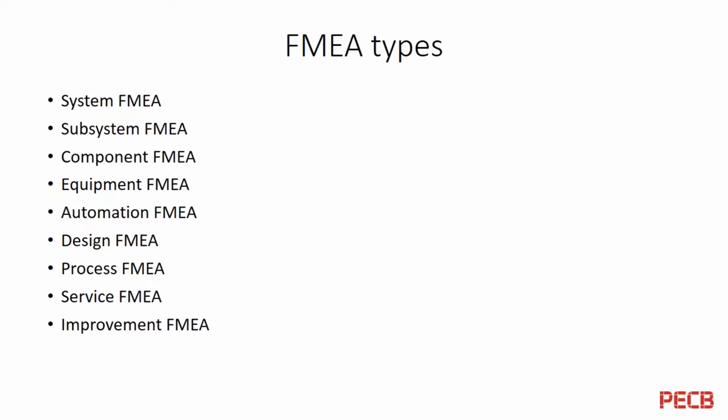Service FMEA is needed if you have a post-production phase that entitles you to make some service on the product at the client's premises — for example, if you have an imaging device that needs to be maintained at the client side. So we need to make a service FMEA, and then improvement FMEA, which is not a specific new type but an update for the above-mentioned types of FMEA.